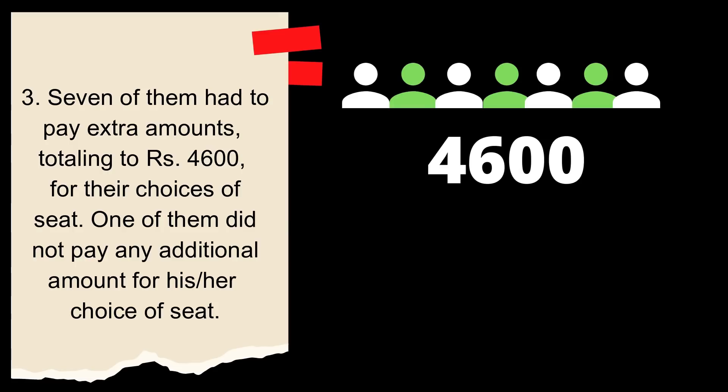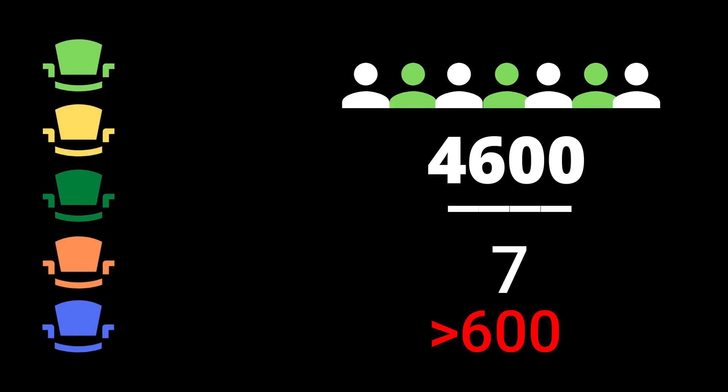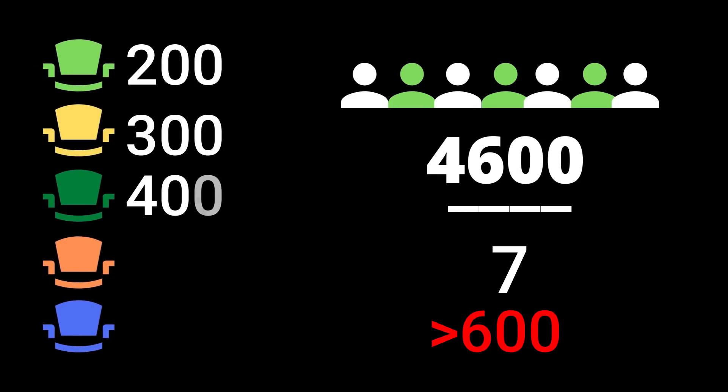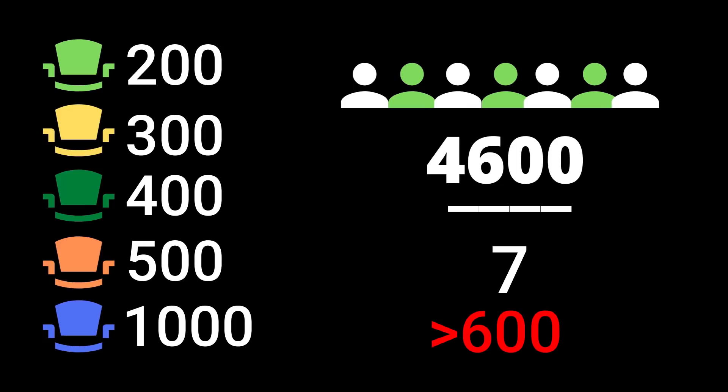Where they say that seven people paid extra amounts totaling to rupees 4,600. Now, the interesting part is that if you divide 4,600 by seven, it amounts to greater than 600. And the pricing that you have available, 200, 300, 400, 500, and 1,000. The only way someone on average would have paid more than 600 is when there would be at least one person paying a thousand bucks.